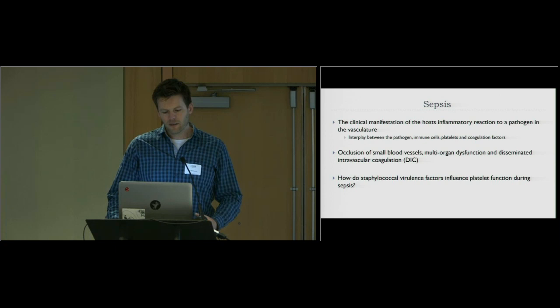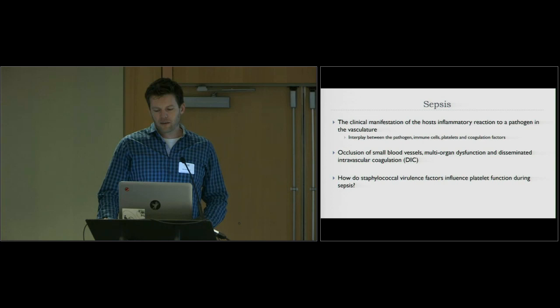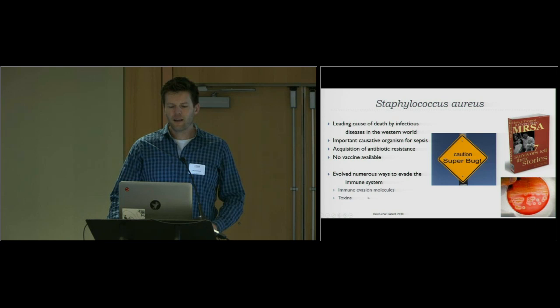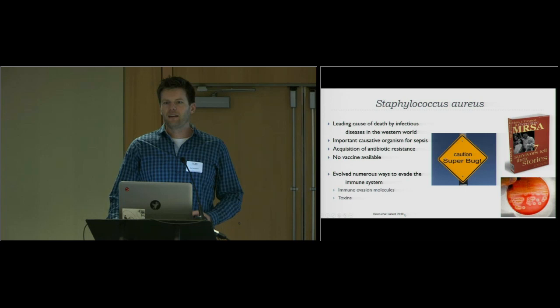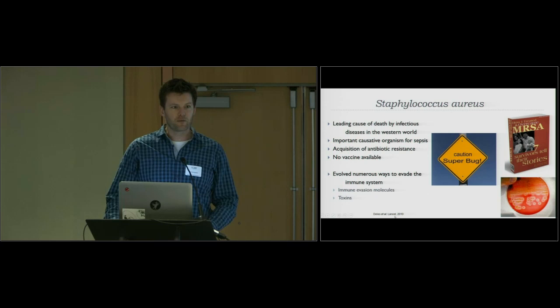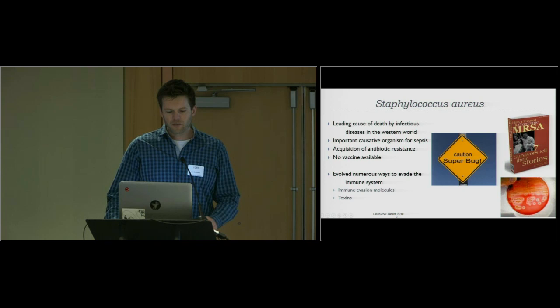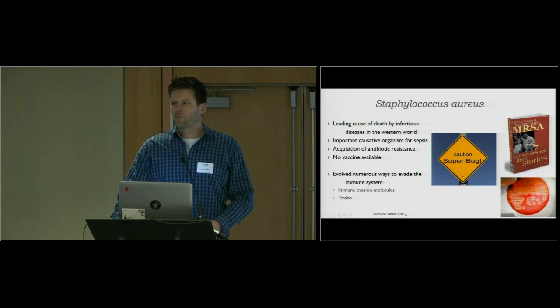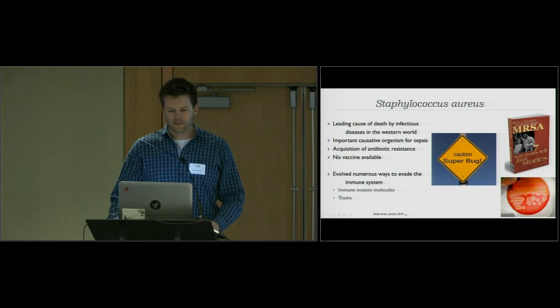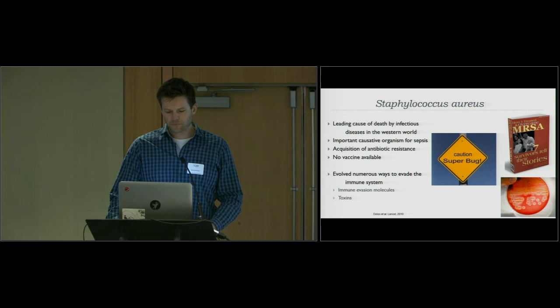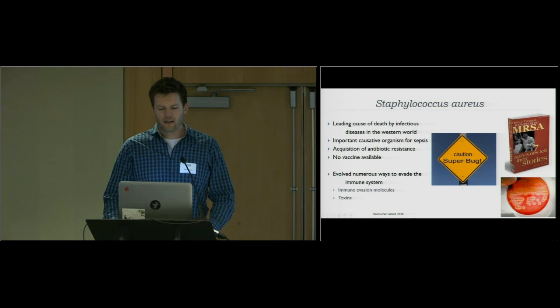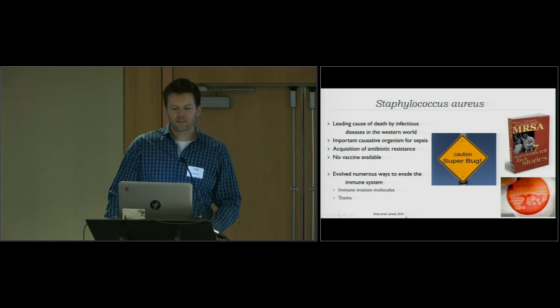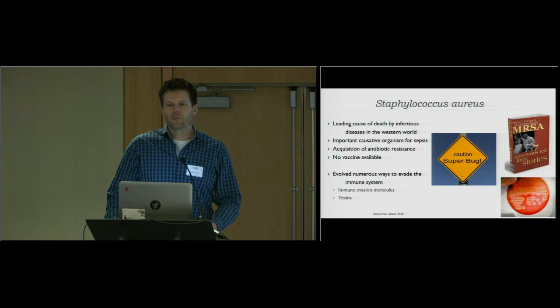Today I'm going to talk about one particular virulence factor from Staph aureus and how this affects platelet function during sepsis. Staphylococcus aureus is a very important pathogen. It's currently one of the leading causes of death by any infectious disease in the Western world — it causes more annual deaths than HIV and influenza combined. It's also commonly isolated in patients with sepsis. Treatment is complicated by antibiotic resistance, and there is no vaccine available for Staph, which is why it's called the superbug. But I like to call it the superbug because it has evolved numerous ways of evading the immune system — Staph can secrete over 50 molecules that hamper different parts of the immune system.